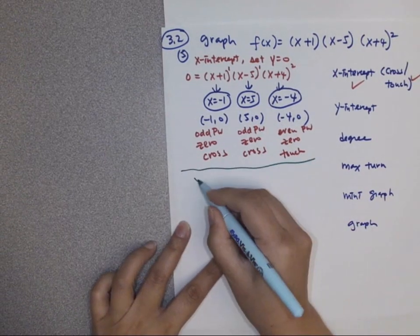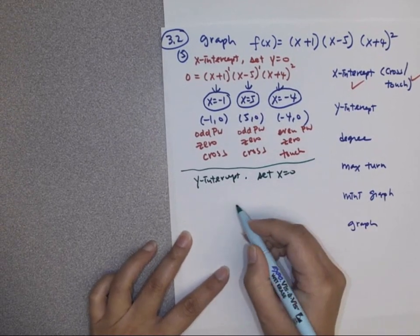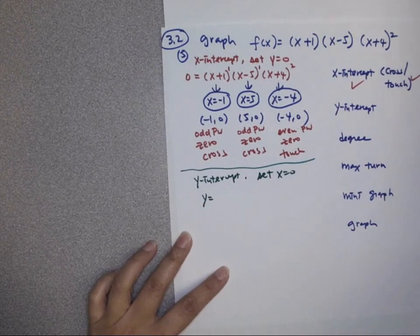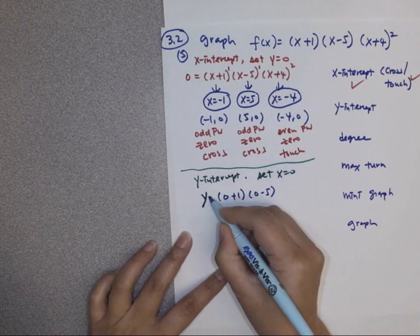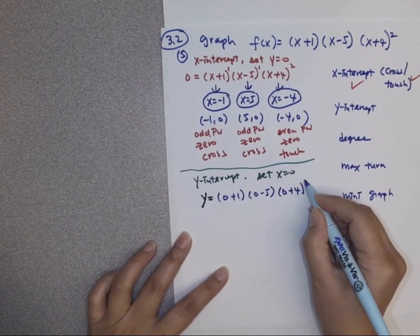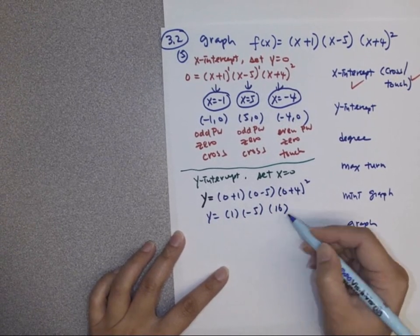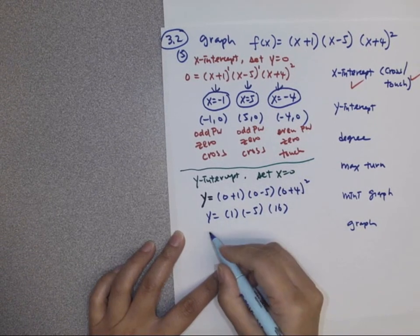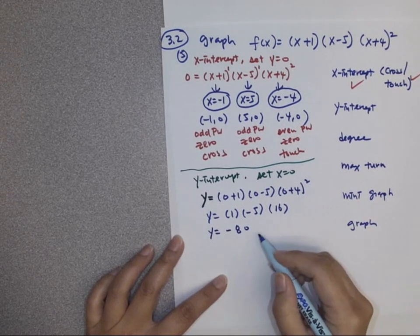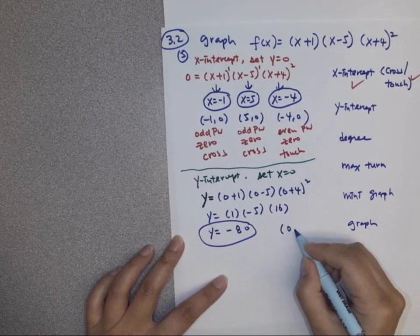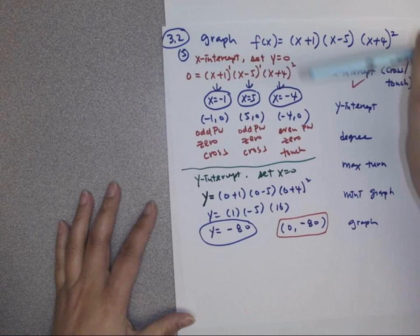After that, find the y-intercept by setting x equal to zero: y = (0 + 1)(0 − 5)(0 + 4)² = 1 · (−5) · 16 = −80. So the y-intercept is (0, −80).